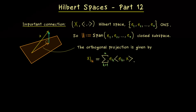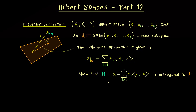To prove that this is indeed the uniquely given orthogonal projection of x onto U, we just have to show that the normal component is perpendicular to U. Let's call the normal component capital N, defined as x minus the orthogonal projection. Showing orthogonality to U is enough because we know there is only one such decomposition of a vector x.